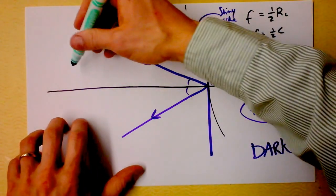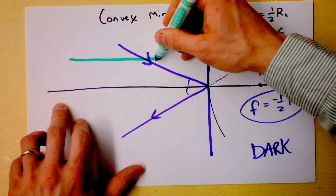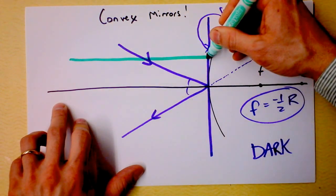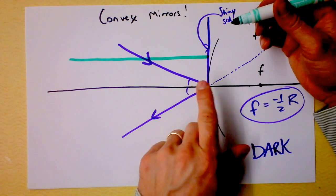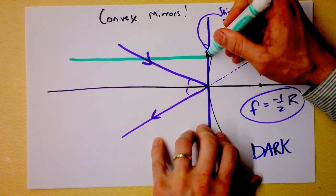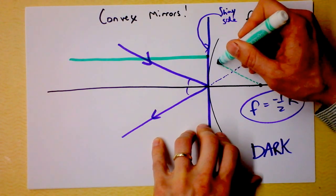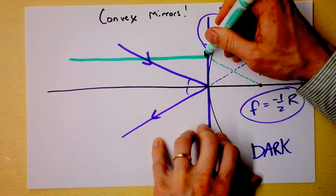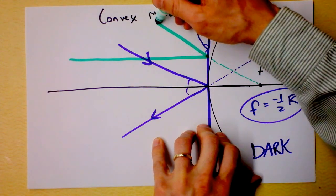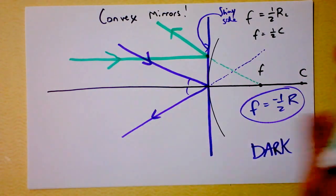Here's a ray, it's going to come in parallel. And it's going to leave as if it had come from the focus. This is a little bit wacky. It's going to leave as if it had come from the focus. So I can start by drawing a dotted line right there and then saying that is where the ray goes, comes in and leaves as if it came from the focus.